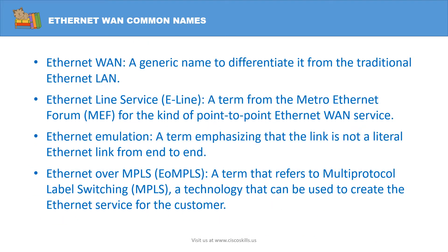Ethernet WAN has several common names. First of all, they usually call it Ethernet WAN — a generic name to differentiate it from the traditional Ethernet LAN. They also refer to it as Ethernet Line Service or E-LINE, a term from the Metro Ethernet Forum for the kind of point-to-point Ethernet WAN service. Then there is Ethernet Emulation, a term emphasizing that the link is not a literal Ethernet link from end to end. The more popular name is Ethernet over MPLS, a term referring to Multi-Protocol Label Switching, a technology used to create Ethernet service for the customer.